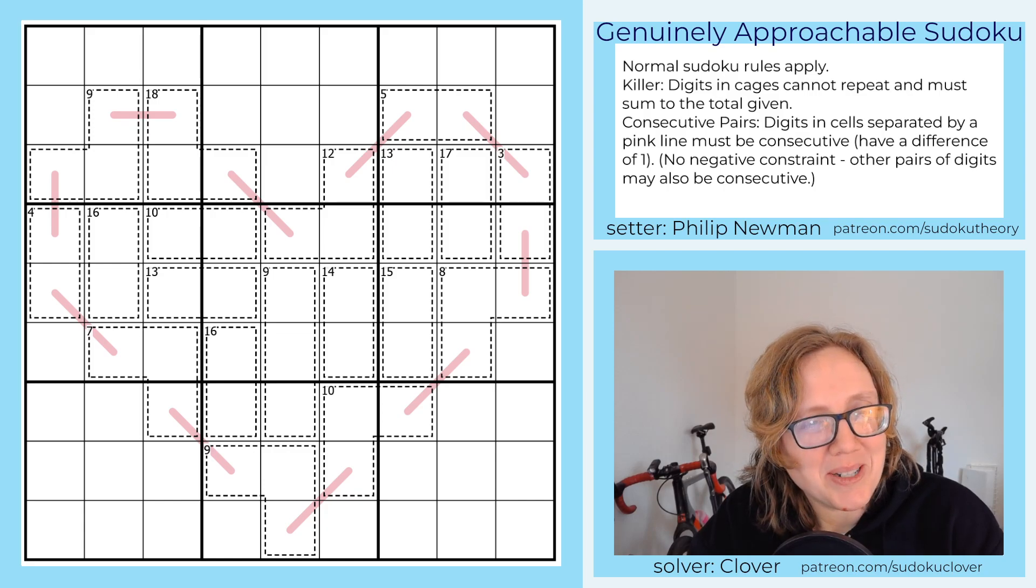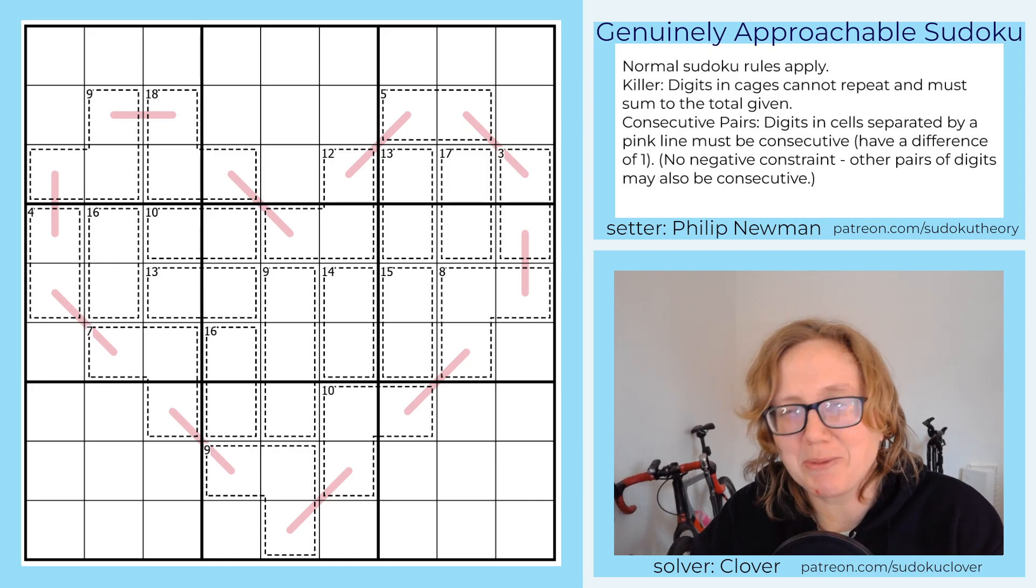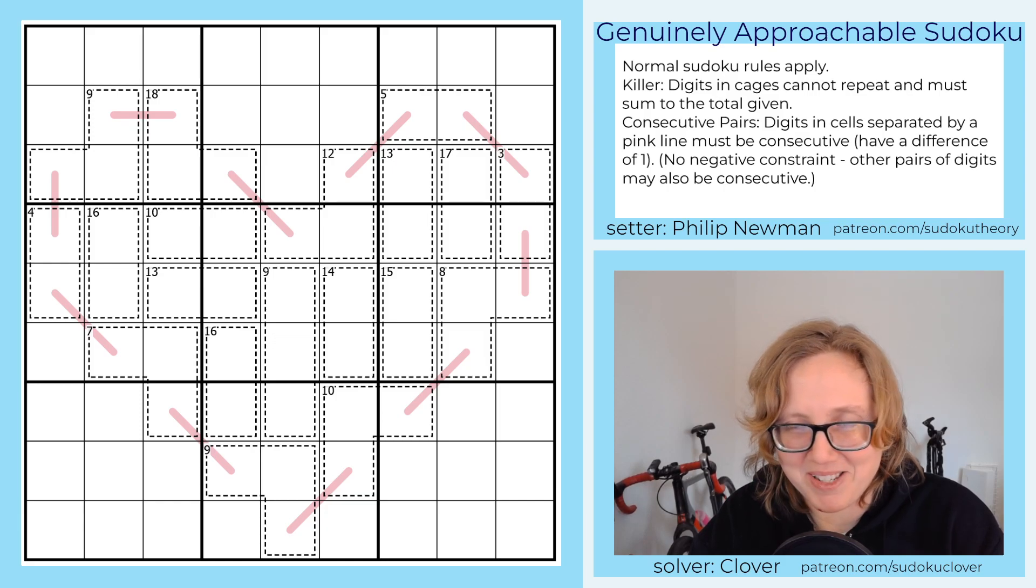But it does harken back to a very famous Philip Gass from a couple years ago now, which was called Shot Through the Heart, which used this very similar kind of heart-shaped arrangement of lines and killer cages. That puzzle obviously was memorable. I still remember it years later, and I'm looking forward to another riff on the idea.